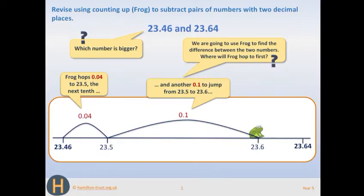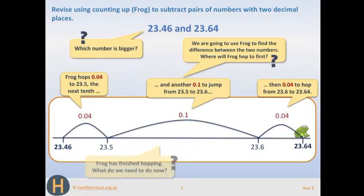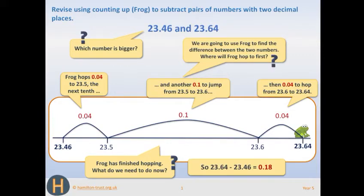You can see that's a bigger jump than the one we just did, because 1 tenth is bigger than 4 hundredths. Finally, we add on the hundredths we need to reach 23.64. We're at 23.6, and that's another 0.04. Now the final step is to add those hops together. You're adding 0.04 with 0.1, so that's 0.14, and then you're adding another 0.04 to that. So it's 0.18.